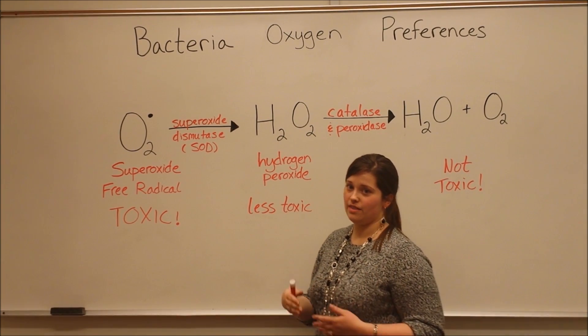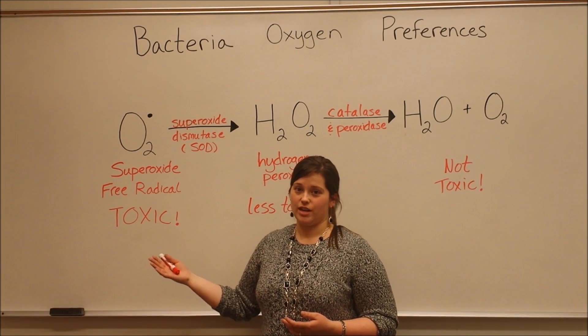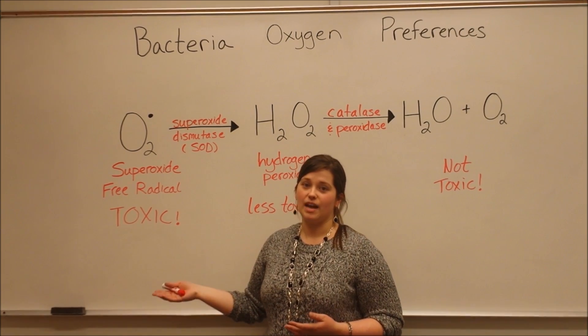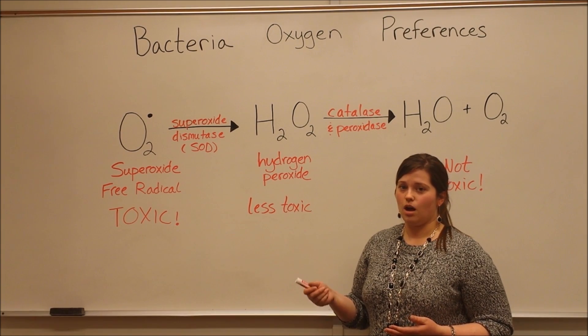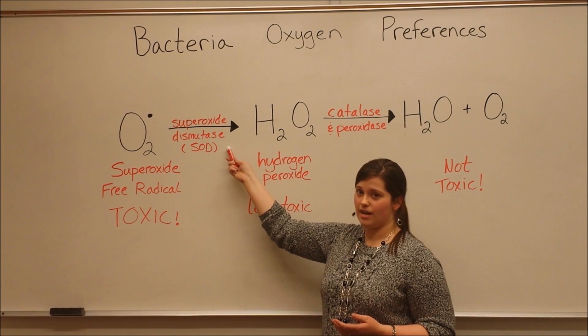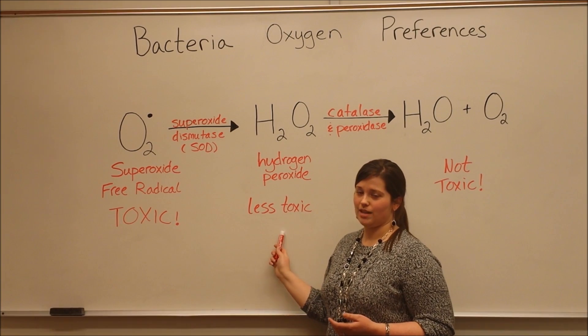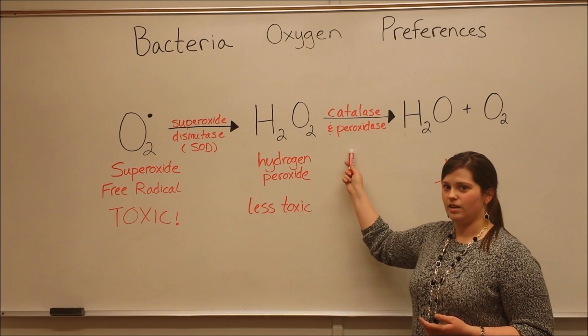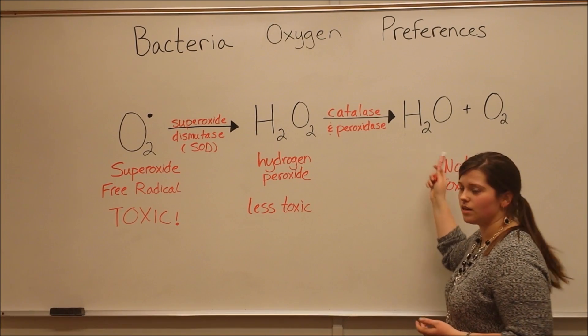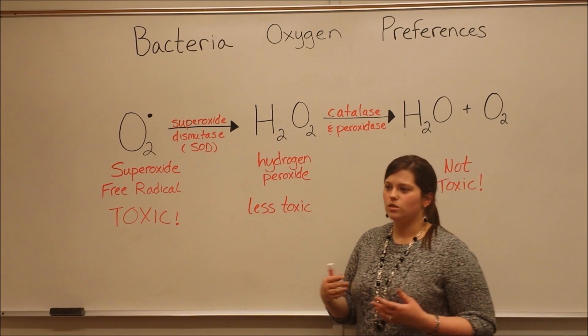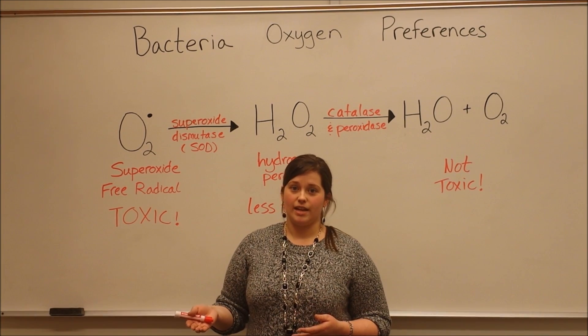So strict anaerobes, when they're in the presence of oxygen, they're building up these superoxide free radicals, which are very dangerous and harm the cell and kill the cell. Then you have other kinds of bacteria, for example, the aerotolerant anaerobes, where they have SOD, they have this one enzyme, so they can at least convert the superoxide free radicals into a less toxic form. But then they lack these additional enzymes that convert hydrogen peroxide down to the non-toxic water and oxygen. So this is why some types of bacteria can survive in oxygen and other types of bacteria can't.